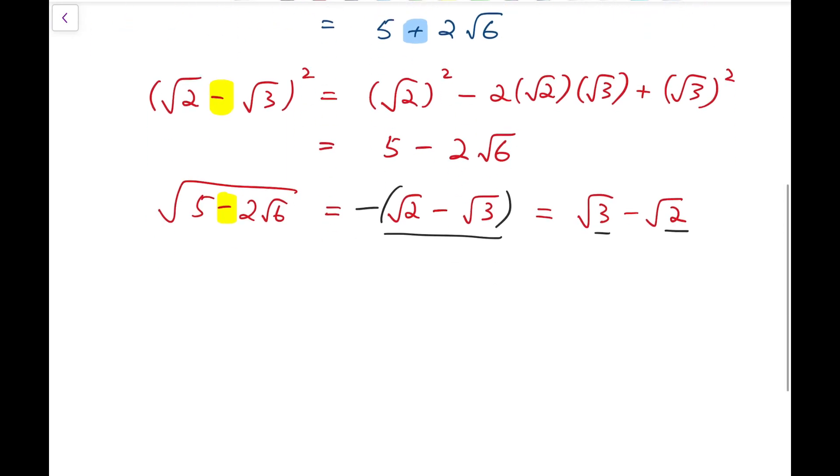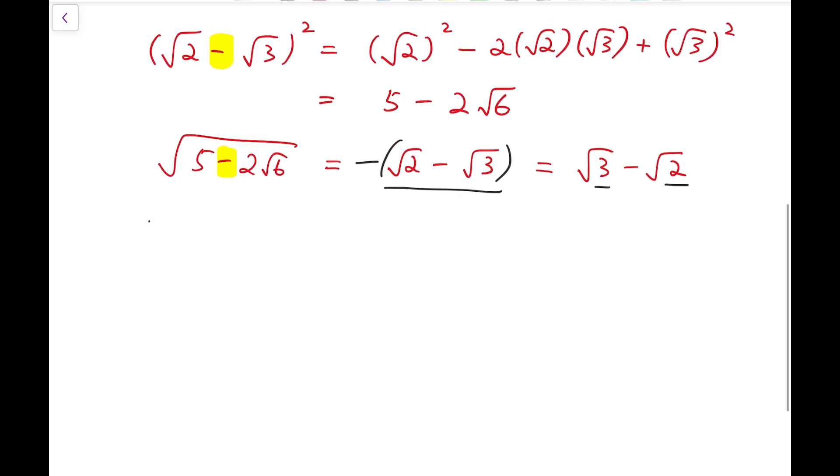So to solve for the square root of 4 minus 2 times root 3, I should be considering the number of the form root a minus root b. And I claim that when it's squared, it's equal to 4 minus 2 times root 3. At the same time, I add an extra constraint where a is larger than b.